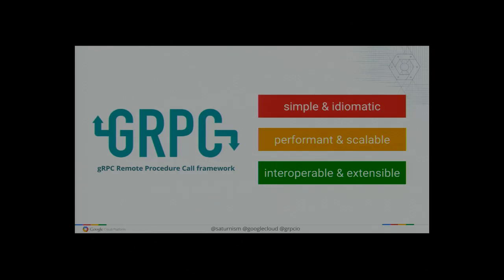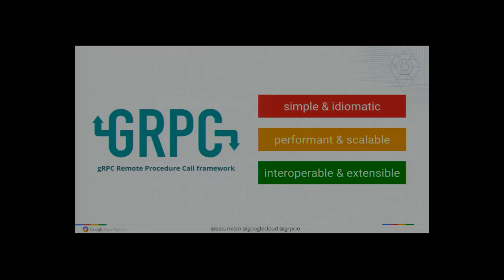What happened is that Google wanted to open source Stubby, and another company called Square was trying to make the next generation of their RPC framework as well. What happened is they joined forces and said, why don't we just open source this Stubby thing altogether and call it gRPC. And that's where gRPC came from — coming from the best practices of both companies in a way. Now gRPC is fully open source.